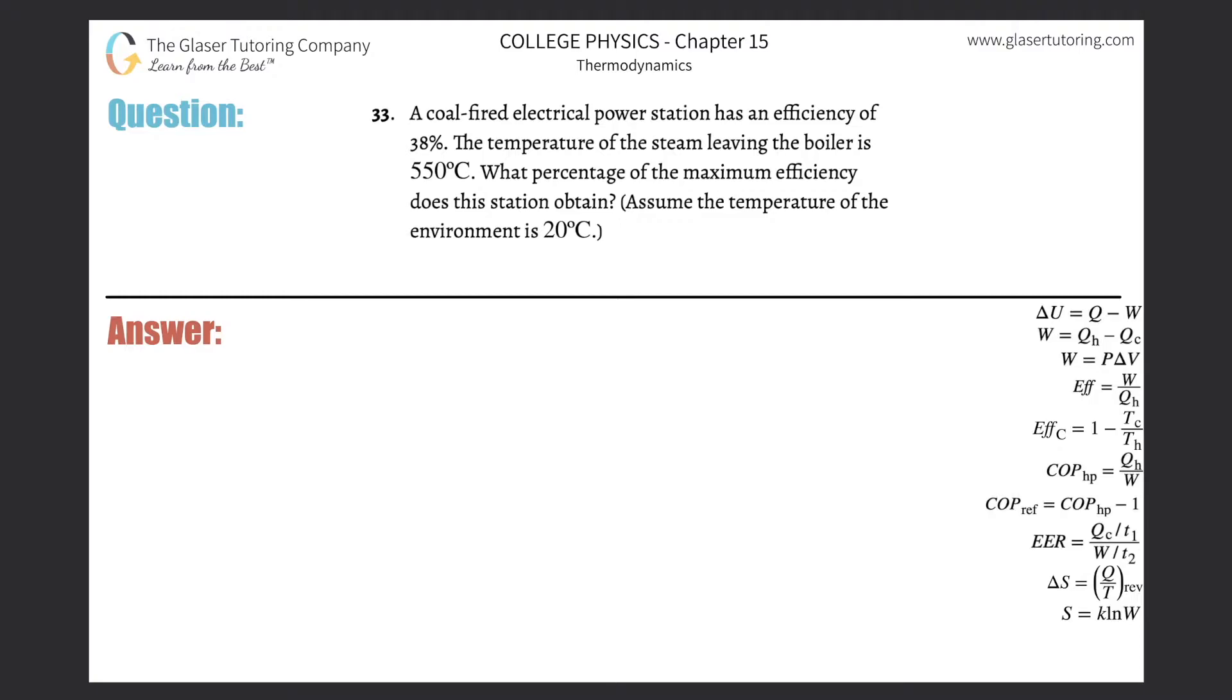Number 33: A coal-fired electrical power station has an efficiency of 38%. The temperature of the steam leaving the boiler is 550 degrees Celsius. What percentage of the maximum efficiency does the station obtain? Assume the temperature of the environment is 20 degrees Celsius.